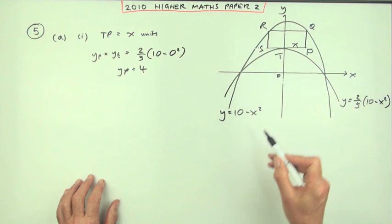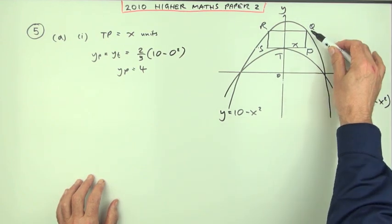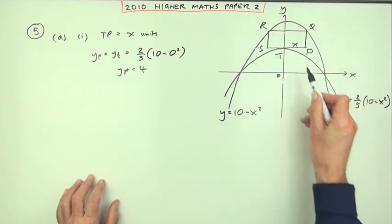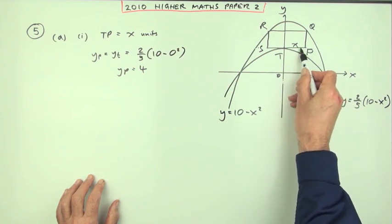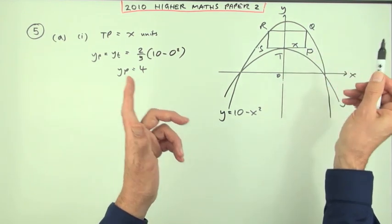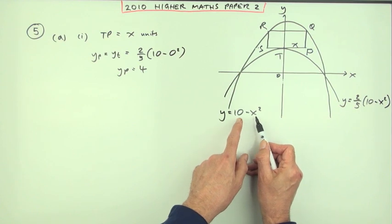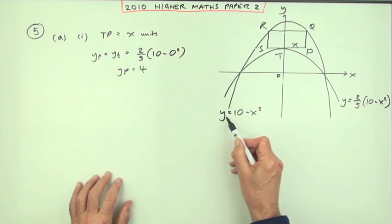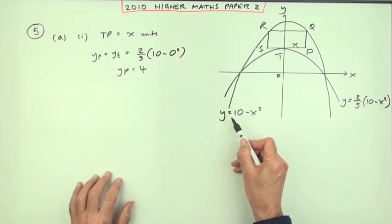Now you need the y-coordinate of Q. Well, don't expect that to be a number because you don't know how many along that is. It's going to depend on x. And confusingly, I suppose, you'll just end up with this same equation because that is the equation for the y-coordinate at Q.